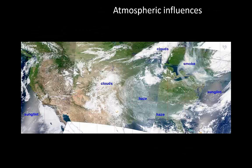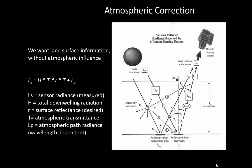Atmospheric influence is a real pain in optical remote sensing — unless that's actually what you're interested in. If you want to know about the surface, you have to deal with things like clouds, haze, and smoke, as you see in this collection of MODIS imagery here, and that needs to be corrected. You also see the effects of glint, particularly on water surfaces, where the Sun behind the satellite casts its light causing that glint. All these things we try to avoid when we want to know about the surface.